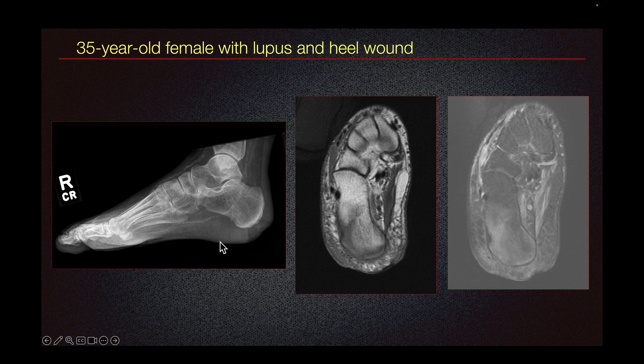Here we have a case of a 35-year-old female with lupus and heel wound. We see a large wound on the heel. There is no obvious erosion of the bone to suggest osteomyelitis. Let's look at the MRI.